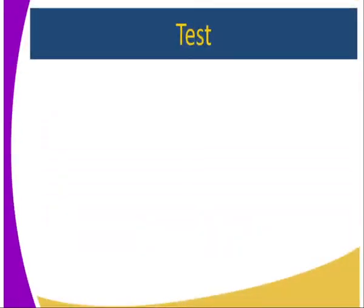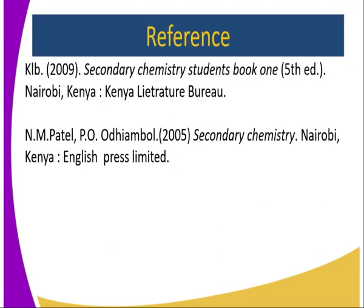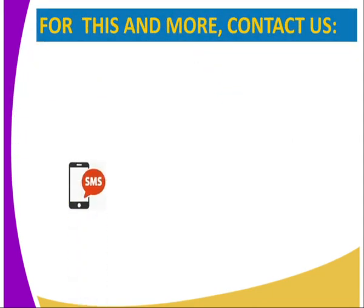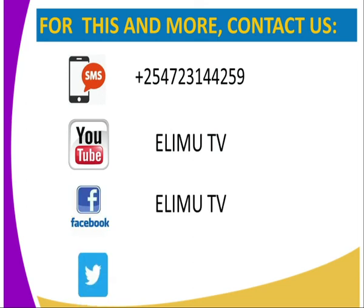Now let's look at the test for this lesson. Question one: what is a base? Question two: state three uses of bases. Question three: explain how bases react with acids, and give a reason why an agricultural officer may recommend the application of soda lime on a piece of land. You can refer to Secondary Chemistry Students Book One, or send us a text, or visit Elimu TV on YouTube, Facebook, or Twitter at ElimuTV_KE. Your tutor is Mr. Mungi Francis — stay tuned for more lessons to come.